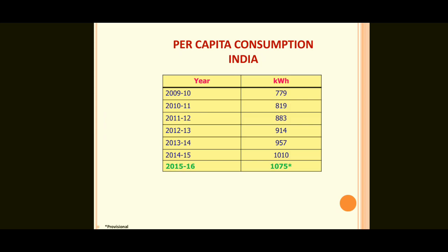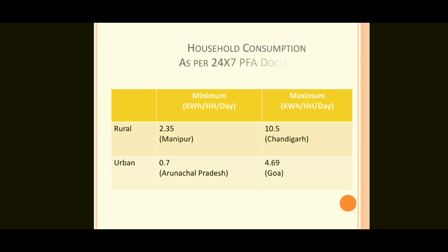Household consumption as per 24x7 Power for All documents: A comparison of rural and urban areas is presented showing minimum and maximum kilowatt hours per day. In rural areas, comparing Manipur and Chandigarh, the minimum is 2.35 kWh/day and maximum is 10.5 kWh/day. For urban areas, the minimum is 0.7 kWh/day and maximum is 4.69 kWh/day.